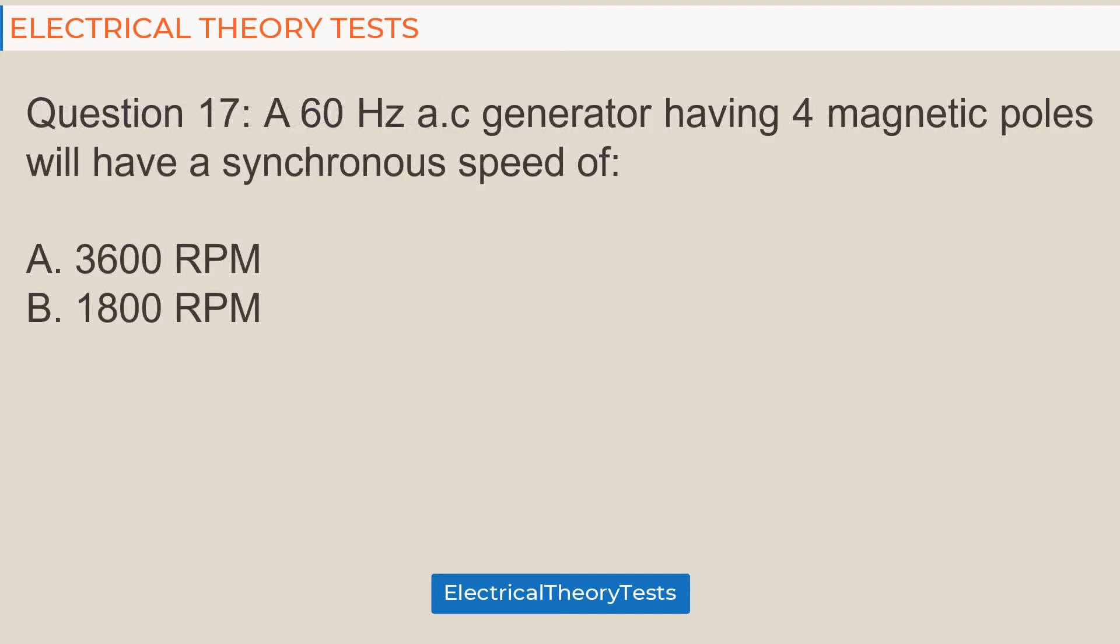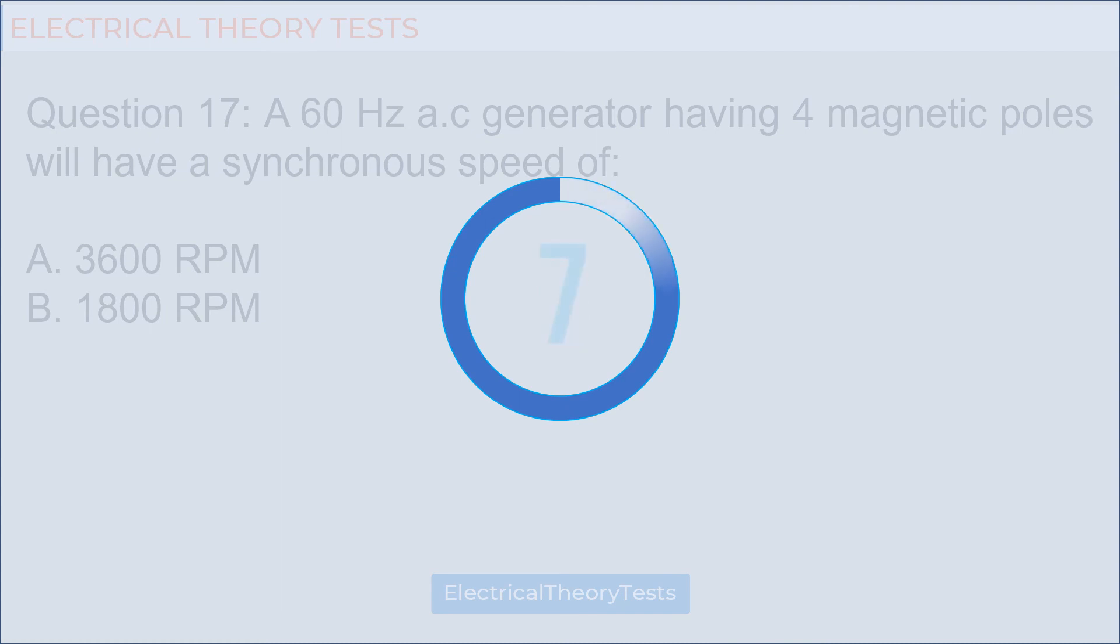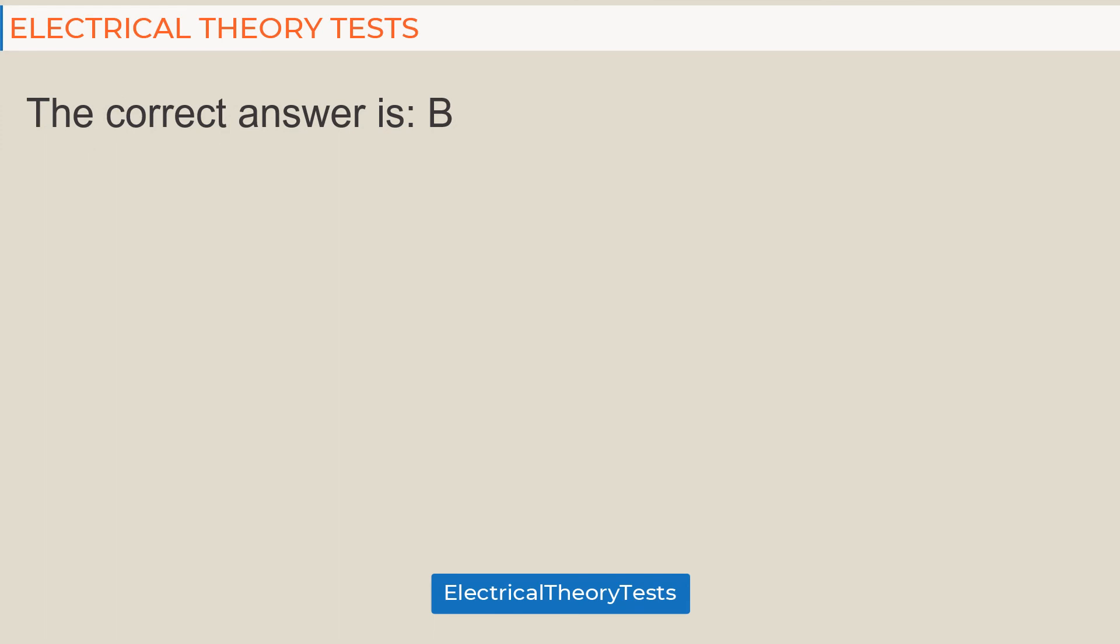Question 17: A 60 hertz AC generator having four magnetic poles will have a synchronous speed of: A: 3600 RPM, B: 1800 RPM, C: 300 RPM. The correct answer is B.